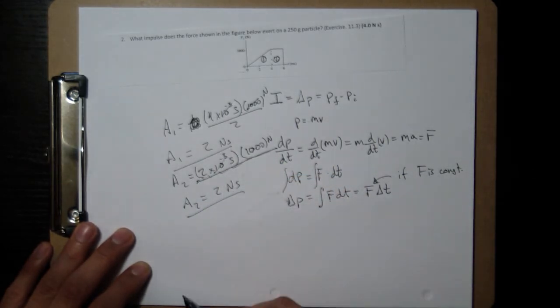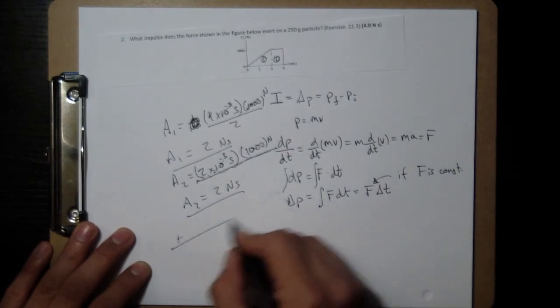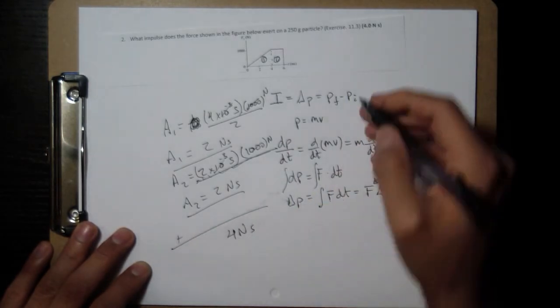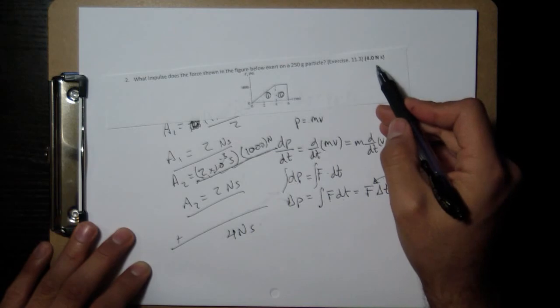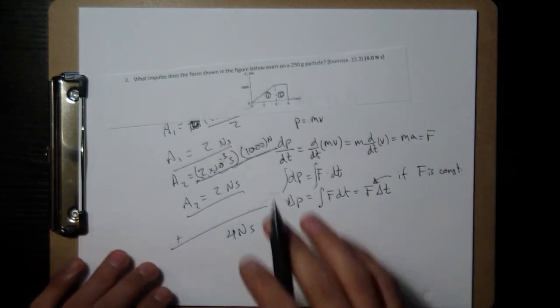So the second area is also going to be 2 Newton seconds. The two areas are each 2 Newton seconds. We add them together and we're going to get 4 Newton seconds, which is what we have for our answer. Done.